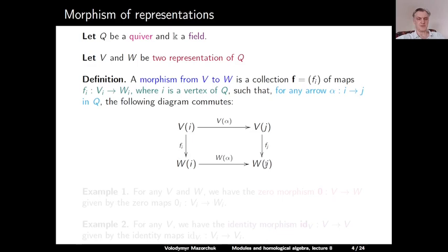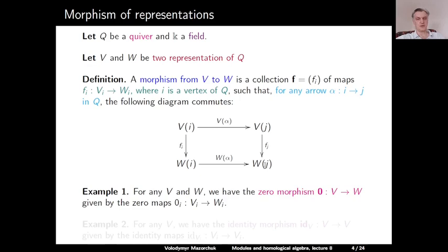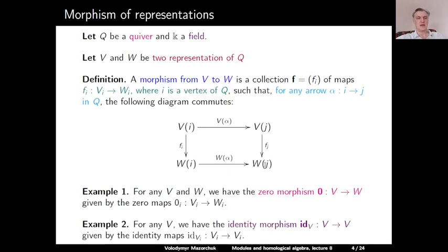For example, for any pair of representations V and W, we have the zero morphism from V to W, given by the zero maps from each V_i to W_i. Another example: for any representation V, we have the identity morphism on V, given by the identity maps on each V_i.